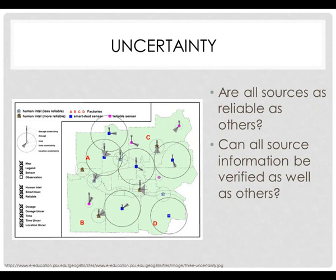Are all sources as reliable as others? Can all source information be verified as well as others? The reality is that this varies tremendously among different data sets. It's important to go back to the concept of data and think about your metadata and how data are created and collected. Having this awareness that analysis results in uncertainty means we need to come to terms with it upfront so that we don't make bad mistakes when we analyze results. We'll see some examples of that as you go through your labs.